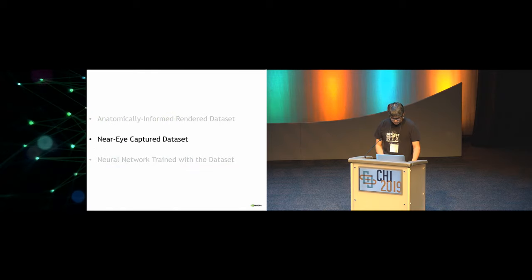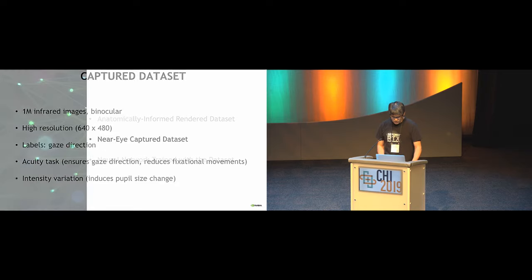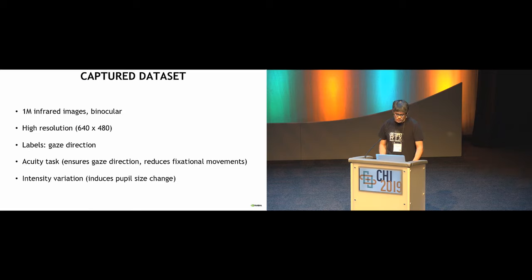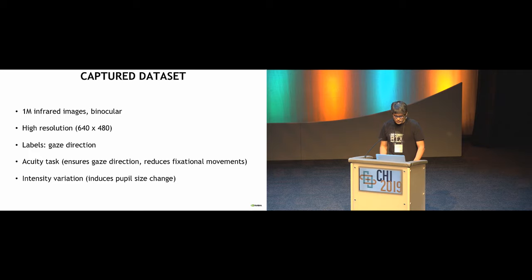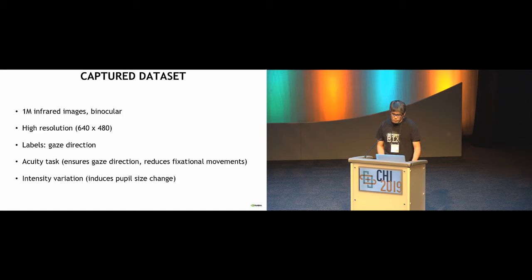Our real dataset consists of one million infrared images, binocular, at the highest resolution among all available real datasets. Each image comes with a label of gaze direction. This is the first dataset that involves an accurate task to ensure accurate gaze direction control and reduce fixational eye movements — the unconscious eye jitter that happens all the time. We also systematically controlled the intensity of the scene the viewer was looking at to induce pupil size change, so pupil center shift is included in our dataset.